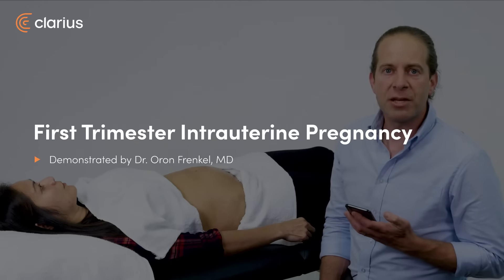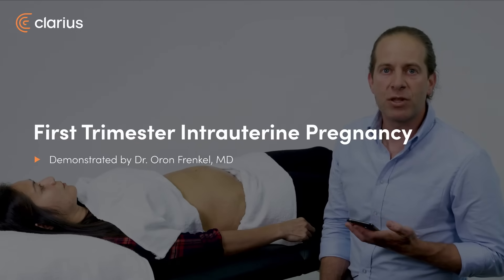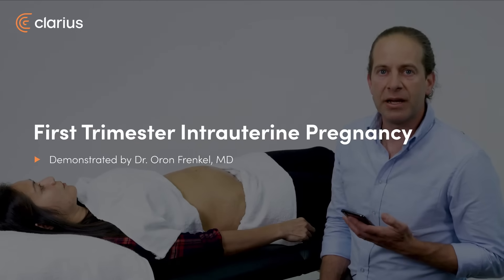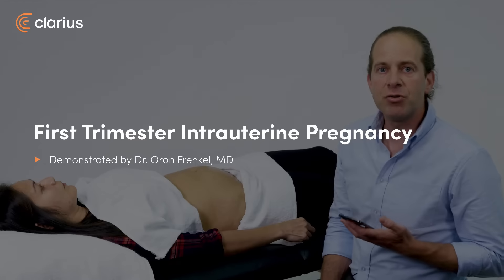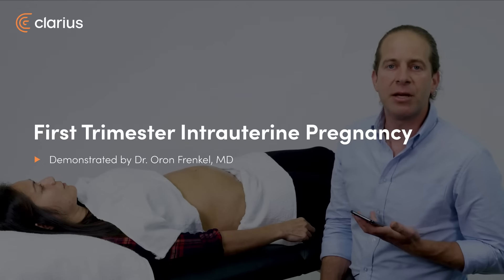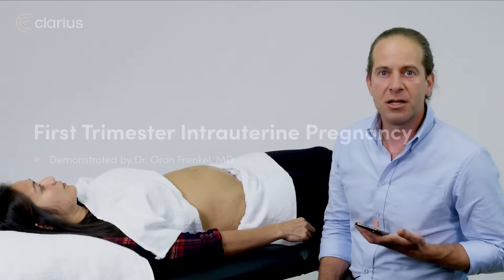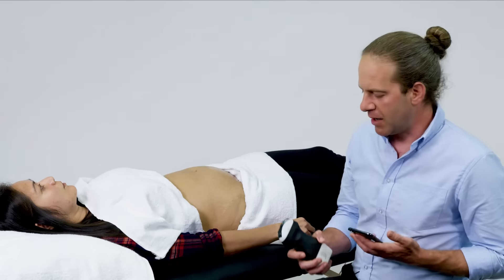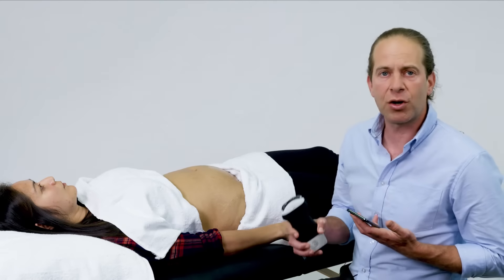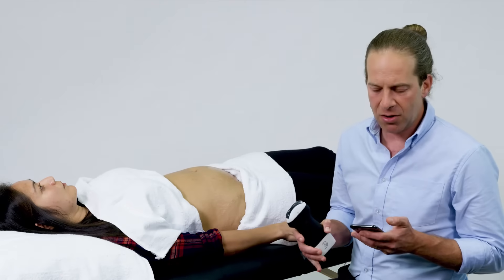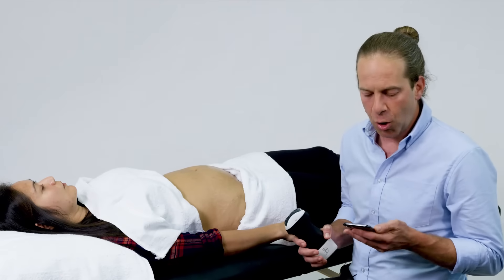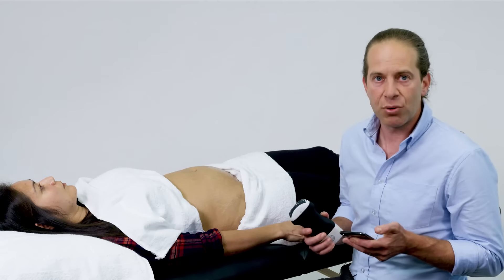In a patient with a first trimester pregnancy with cramping or bleeding, an intrauterine pregnancy can be quickly identified at the bedside. To perform this scan, I'll use the curvilinear scanner on an OBGYN preset.